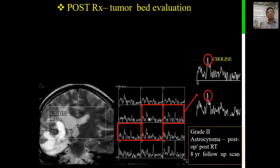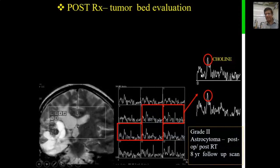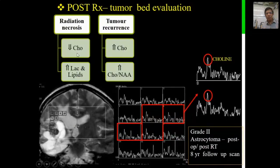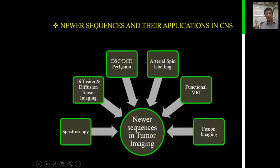When evaluating the post-tumor bed, you want to differentiate recurrence from radiation necrosis. Running a multi-voxel spectroscopy and looking for high choline in the tumor bed indicates recurrence. If across all voxels there is only high lipid and nothing else, you are dealing with radiation necrosis. In summary, radiation necrosis will have low choline and high lipid-lactate, whereas tumor recurrence will have high choline and a high choline-to-NAA ratio.